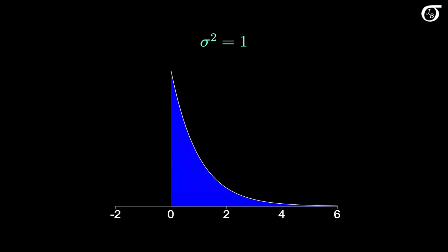Let's take a quick look at one more distribution. The distribution in blue is an exponential distribution with a variance of 1, and the superimposed green curve is a normal distribution with the same mean and variance. This exponential distribution obviously has some right skewness, but it also has a heavier right tail — there is more area far out in the right tail. This exponential distribution is going to result in more extreme values of the sample variance s squared.